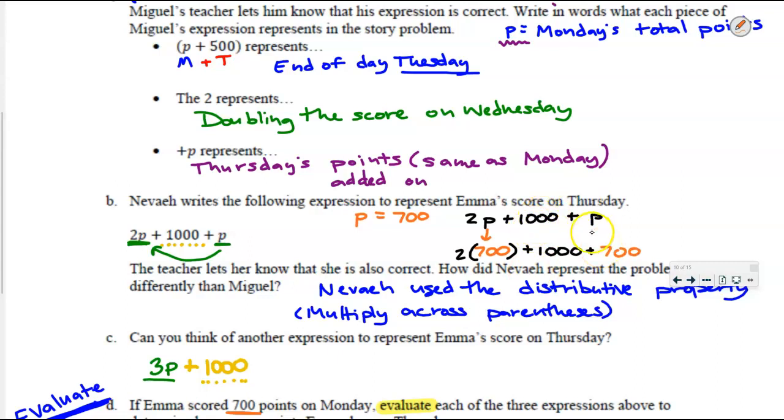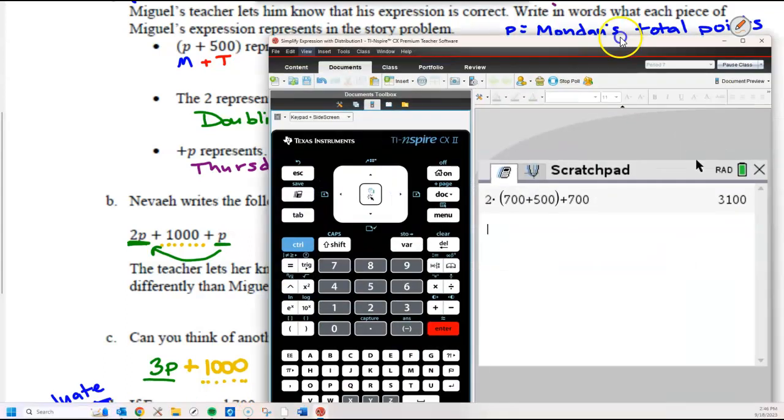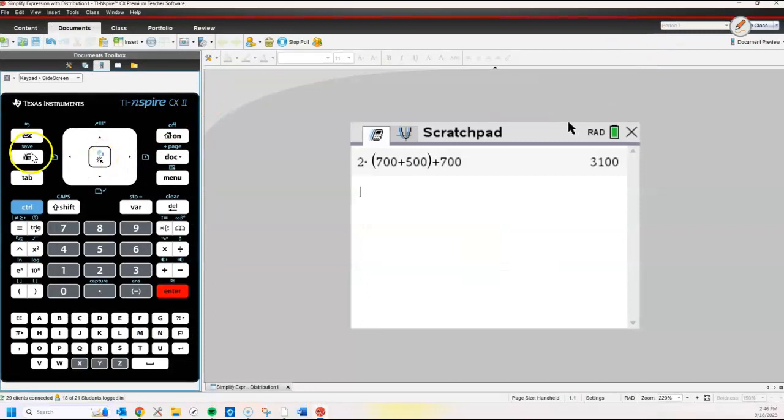So 2 times 700 plus 1000 plus another 700. Let's try and do this in our heads first, and then we can use our calculator. What's 2 times 700? 14. So 2 times 700 is going to be 1400. Add 1000. 1400 plus another 1000. 2400 plus another 700 is indeed 3100 again. Let's use our calculators once again. 2 times 700 plus 1000 plus that last day Thursday when we scored an additional 700 points. And what do you get? 3100 once again.